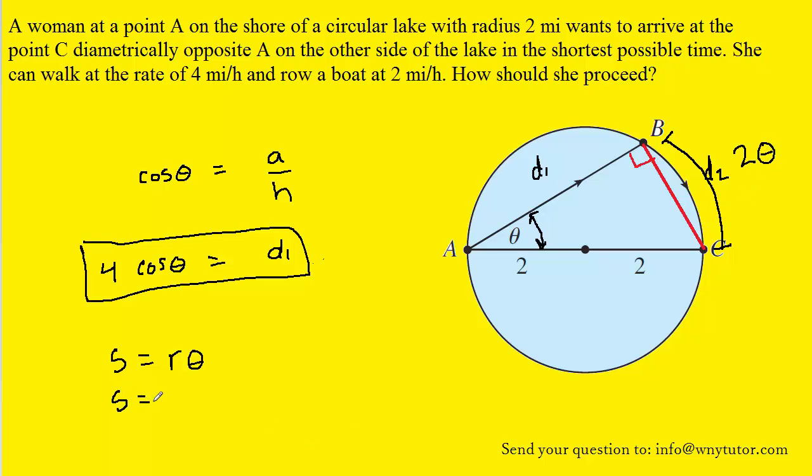Plugging into the arc length formula, we would have the radius of the circle, which was 2 miles, multiplied by the angle that the arc length is represented by, and that is 2 theta, and therefore, we get 4 theta for the arc length from B to C. We've called that D2. So in essence, D2 is equal to 4 theta.